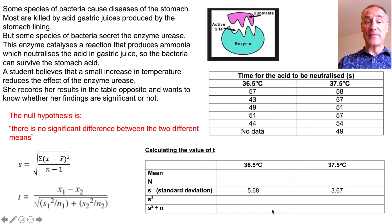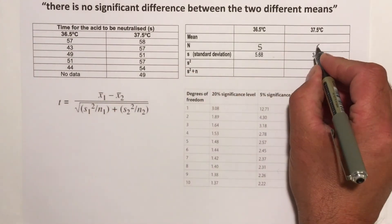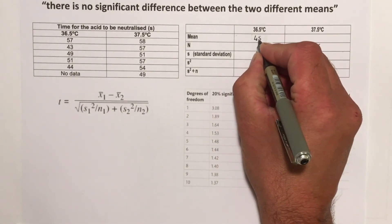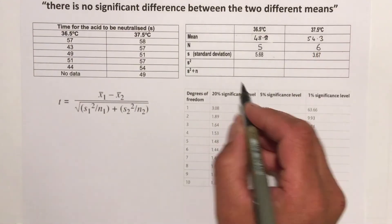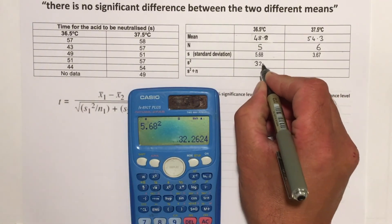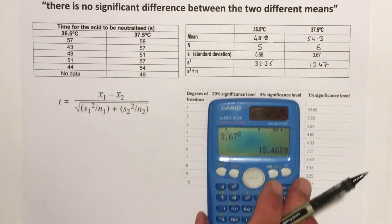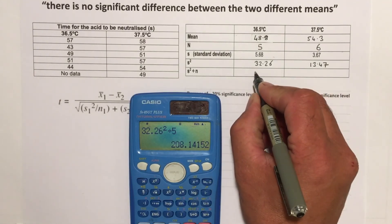First I record the amount of data in each sample — one sample has five, the other six. The mean for the first sample is 48.8 and for the second is 54.3. Since the standard deviation is already given, I just need to square each standard deviation and record it in the table. Then I calculate standard deviation squared divided by n for both samples at 36.5 and 37.5 degrees.